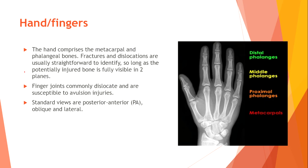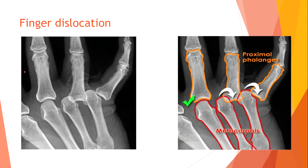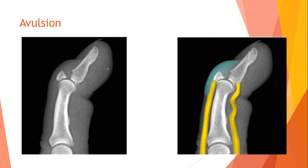Hand and fingers. The hand comprises the metacarpal and phalangeal bones. Fractures and dislocations are usually straightforward to identify, so long as the potentially injured bone is fully visible in two planes. Finger joints commonly dislocate and are susceptible to avulsion injuries. Standard views are posterior-anterior, oblique, and lateral. Here we have an example of loss of alignment and dislocation of the proximal phalanges, and an avulsion fracture of the distal phalanx of a finger.